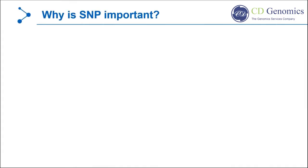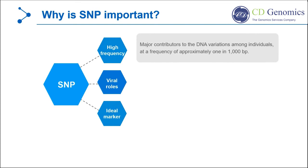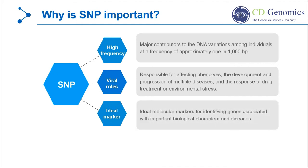Let's begin with why SNP genotyping is important. SNP, the abbreviation of single nucleotide polymorphism, represents a variation in a single nucleotide that occurs at a specific position in the genome. SNPs are the major contributors to the DNA variations among individuals, at a frequency of around 1 in 1000 bp. SNPs have been suggested to be responsible for phenotypic differences, and to affect the development and progression of diseases, as well as to determine the response to drug treatment and environmental stress. SNPs can serve as ideal molecular markers for identifying genes associated with important biological characters and diseases.